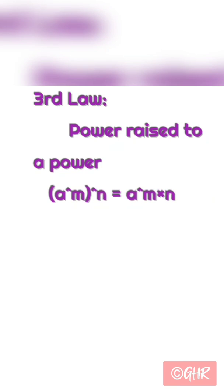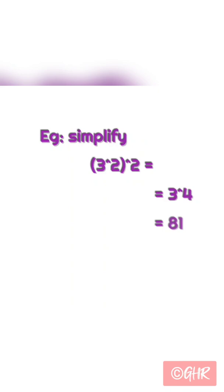Third law: power raised to a power. a to the power of m, whole to the power of n, is equal to a to the power of m into n. Example: 3 to the power of 2, whole to the power of 2, is equal to 3 to the power of 4, which equals 81.